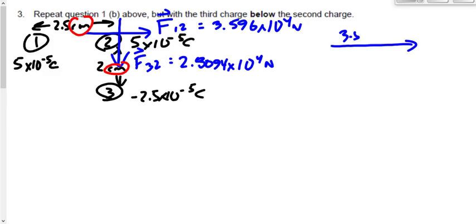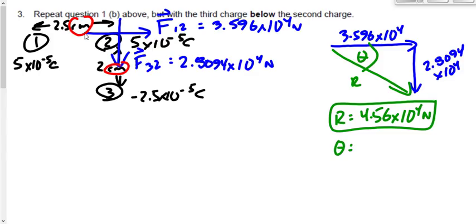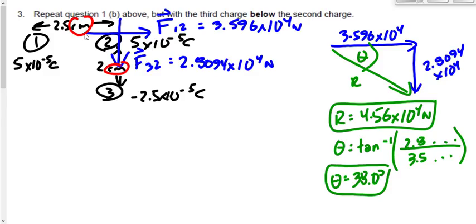We're going to say F1,2 is to the right, 3.596 times 10 to the 4. And we're going to say F3,2 is down. That's 2.8094 times 10 to the 4. And the resultant vector is going to be drawn from start to finish here. That's what we're looking for. R is equal to the square root of 3.5 squared plus 2.8 squared. And when we do that, we end up getting 4.56 times 10 to the 4 newtons. Theta, we're not going to express this as a south of east thing because we're not told that north, south, east, west is our frame of reference. We're just going to calculate the angle and say the angle that I have labeled ends up being 38 degrees. It comes from the inverse tan function of 2.8 over 3.5 something, giving me a theta of 38.0 degrees.